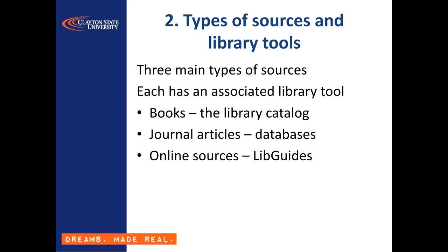This section is about information sources. There are three main types of information sources you can use for your research project: books, articles from journals, and sources found online. Each has their own particular characteristics, and each has a library tool you can use to search and locate them effectively. Let's take a look at each in turn.